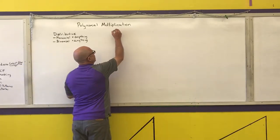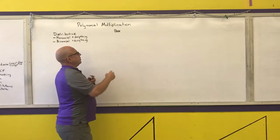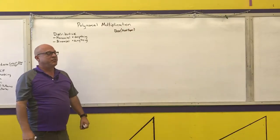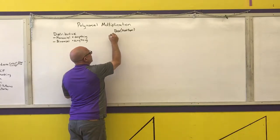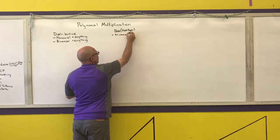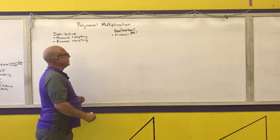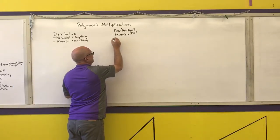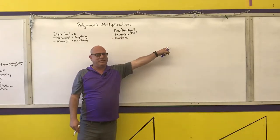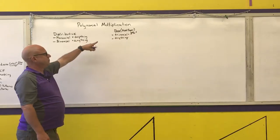The next method is the box method, which uses the most paper. My recommendation for using the box method is for any trinomial times a third-degree or higher polynomial. You can use it for anything if you want. My recommendation is that if the last method seems confusing to you, use the box method — a lot of students do.